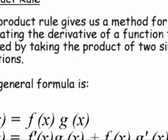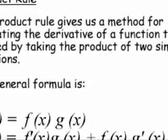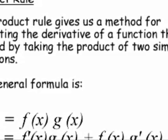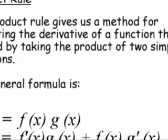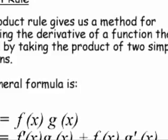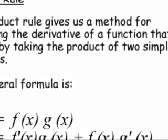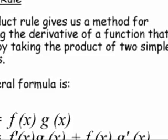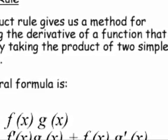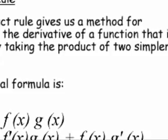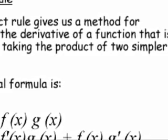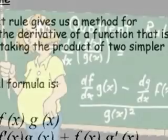So, to begin, you will take the derivative of the first equation, f of x, then multiply by the second equation's original. Then you will add the derivative of g of x times the original of f of x. This is a very important rule because it is used a lot, especially when using the chain rule or taking functions to the second derivative.